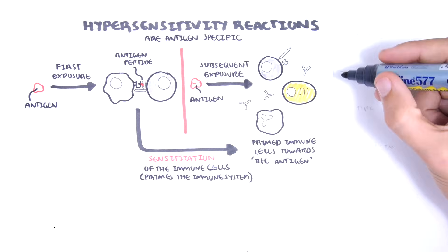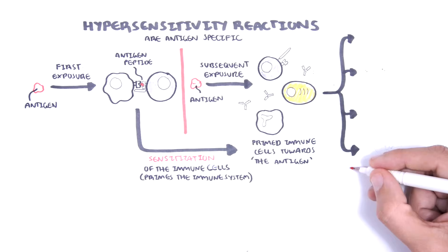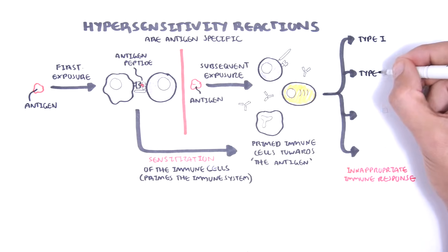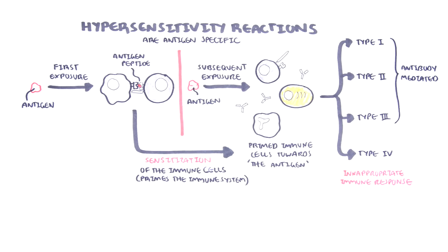But the immune system can cause hypersensitivity reactions in different ways. And that is why hypersensitivity reactions can be subdivided into four main types. Type 1, type 2, and 3 hypersensitivity reactions are antibody-mediated, whereas type 4 is a cell-mediated hypersensitivity reaction.